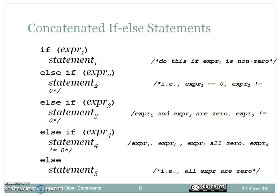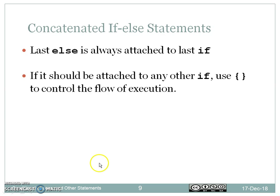Concatenated if-else statements allow chaining two or more conditions. If expression one is true, it selects statement one; else if expression two is true, then statement two; if expression three is true, then statement three. We can write any number of else-if blocks. Finally, if all expression values are evaluated to false, the default else block will be executed. The last else is always attached to the last if; to attach it to any other if, use flower braces to control the flow of execution.